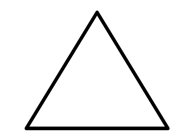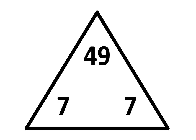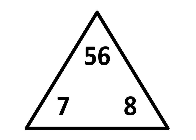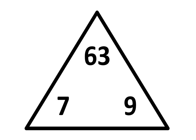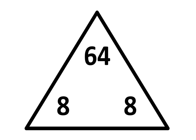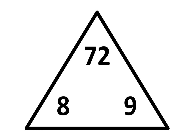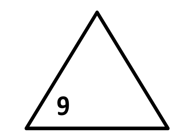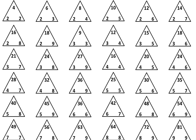Let's move to the final row. In the next triangle, write 7 times 7 is equal to 49. In the next triangle, write 7 times 8 is equal to 56. In the next triangle, write 7 times 9 is equal to 63. In the next triangle, write 8 times 8 is equal to 64. In the next triangle, write 8 times 9 is equal to 72. And in the next triangle, write 9 times 9 is equal to 81. And that completes all 36 relationships.